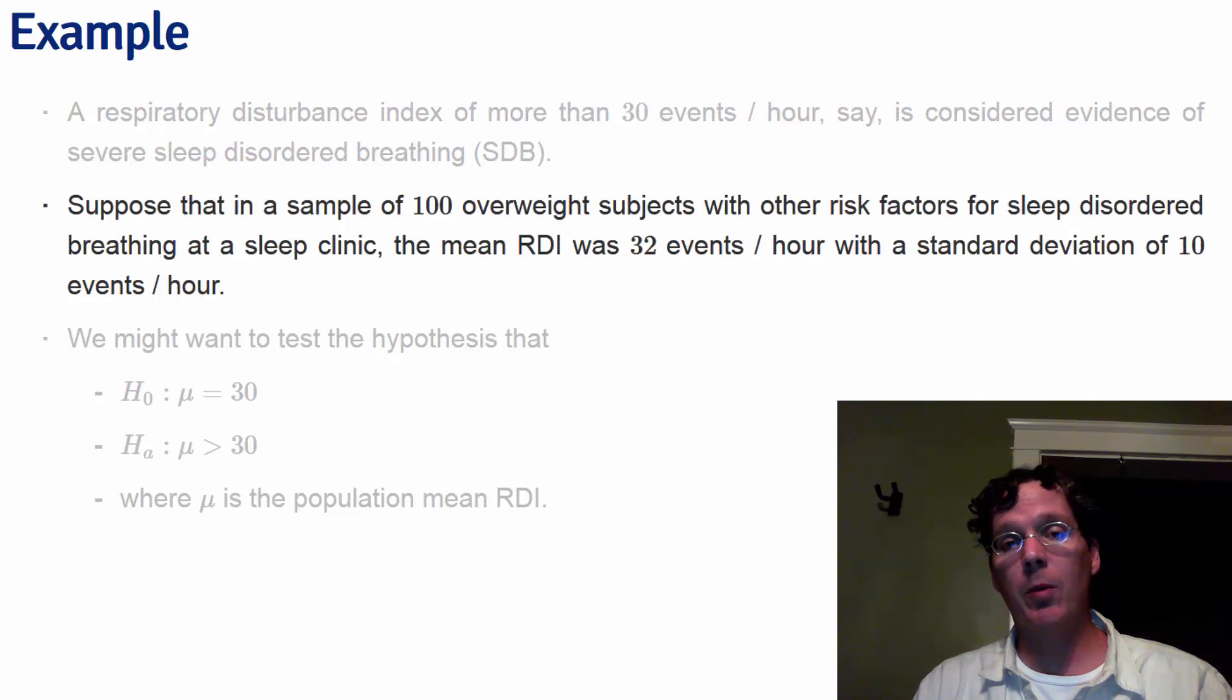Suppose that in a sample of 100 overweight subjects with other risk factors for sleep disordered breathing at a sleep clinic, the mean RDI was 32 events per hour with a standard deviation of 10 events per hour.